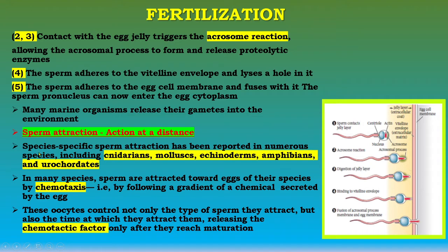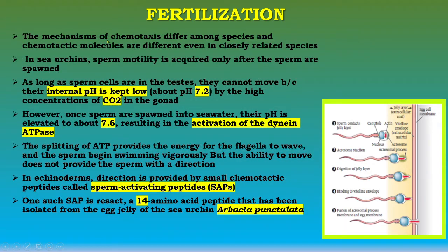Species-specific sperm attraction has been reported in numerous species including cnidarians, molluscs, echinoderms, amphibians, and urochordates such as Halocynthia. In many species, sperm are attracted toward eggs of their species by chemotaxis — following a gradient of chemicals secreted by the egg. These oocytes control not only the types of sperm they attract but also the time at which they attract them, releasing the chemotactic factor only after they reach maturation. The mechanisms of chemotaxis differ among species, and chemotactic molecules differ even in closely related species.